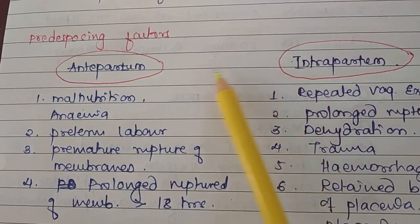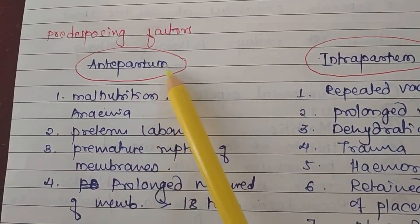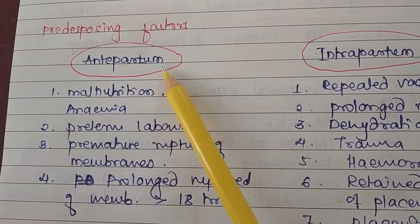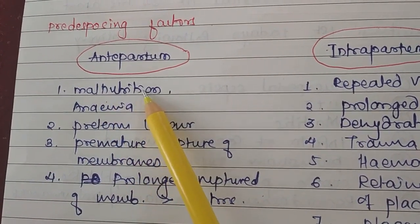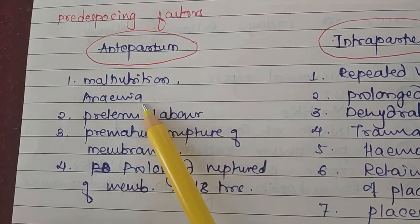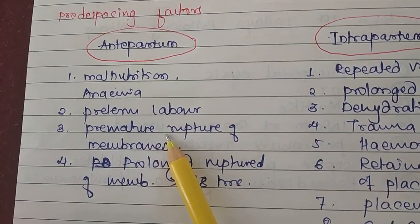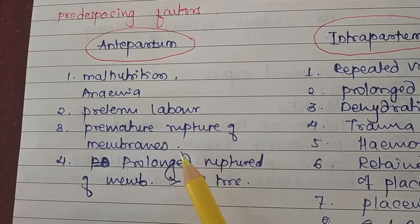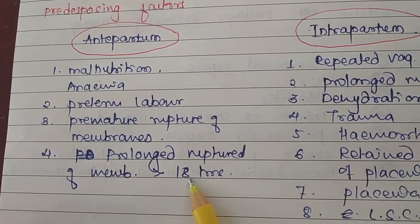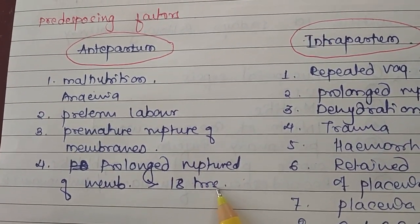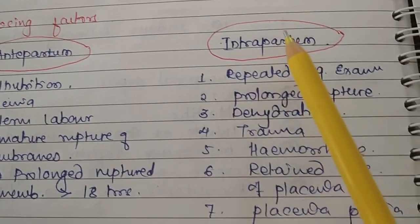During antenatal care, the predisposing factors are malnutrition leading to anemia, preterm labor pain, premature rupture of the membranes, and prolonged rupture of the membranes — that is, more than 18 hours.